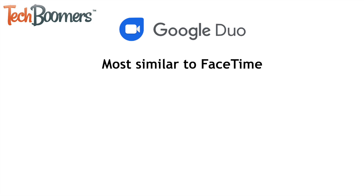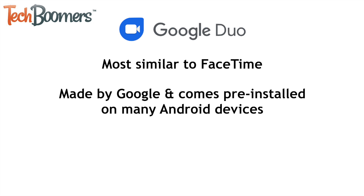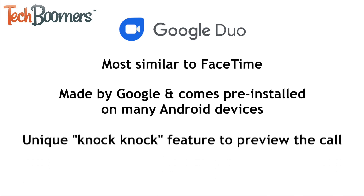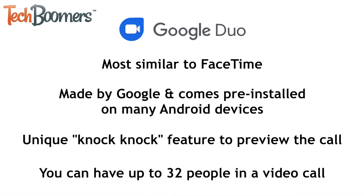Next up is Google Duo. We'd consider this option to be most similar to FaceTime in terms of its interface and layout. It's an app fully dedicated to video calling, and as it's made by Google, it often comes pre-installed on Android devices. Duo is available on both Android and iPhone, and has a unique feature called Knock Knock that allows you to see the person who's calling you before you pick up. Google Duo can accommodate group video calls of up to 32 people.